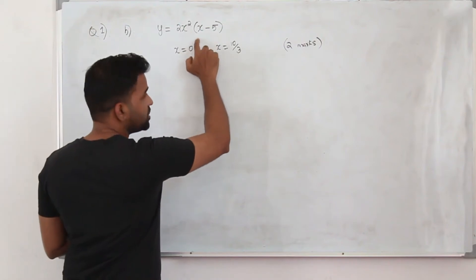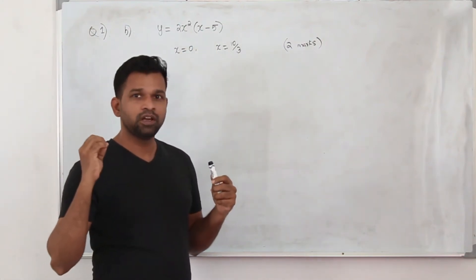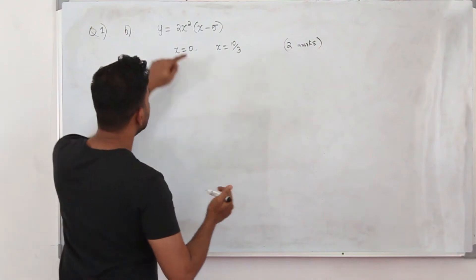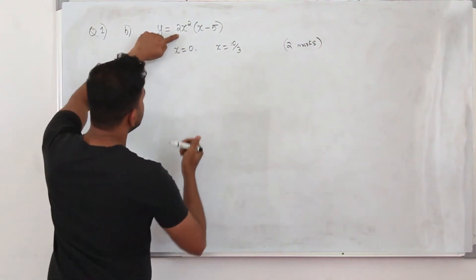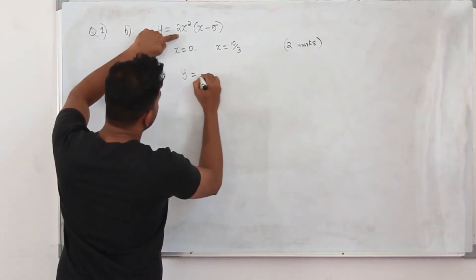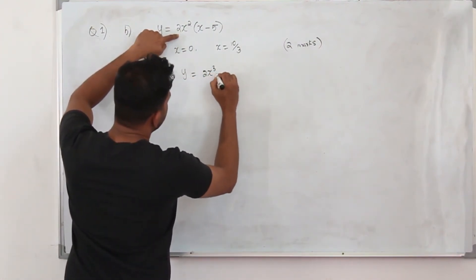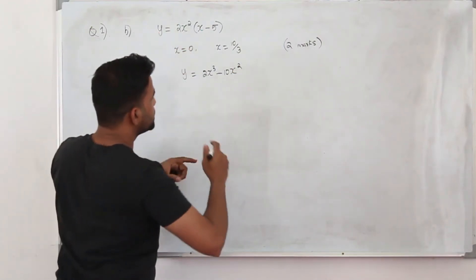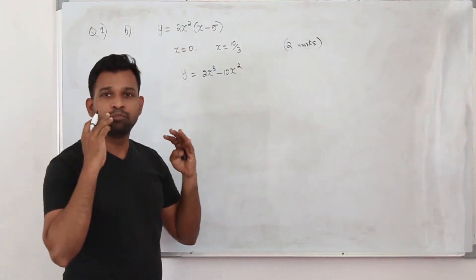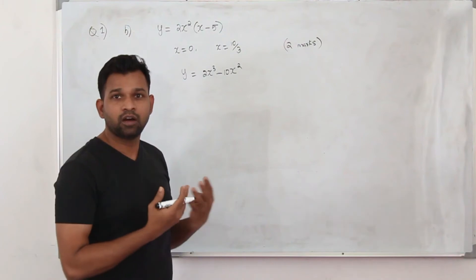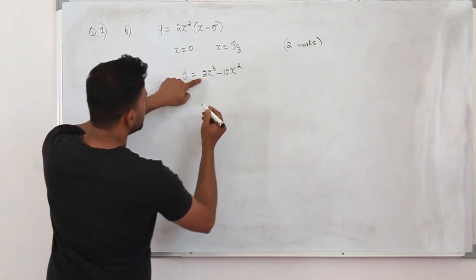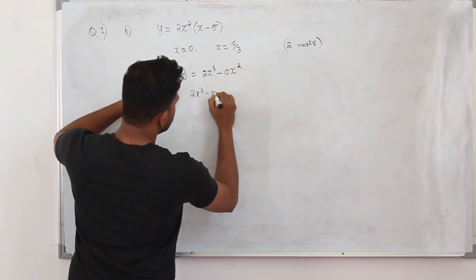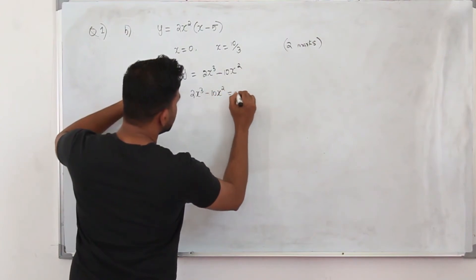Here I am going to sketch the graph to explain the concept, though in your exam you won't have enough time to do this. The function is 2x cubed minus 10x squared — it's a cubic function. In Pure Math 1 we learn how to sketch cubics. Solve 2x cubed minus 10x squared equals 0.